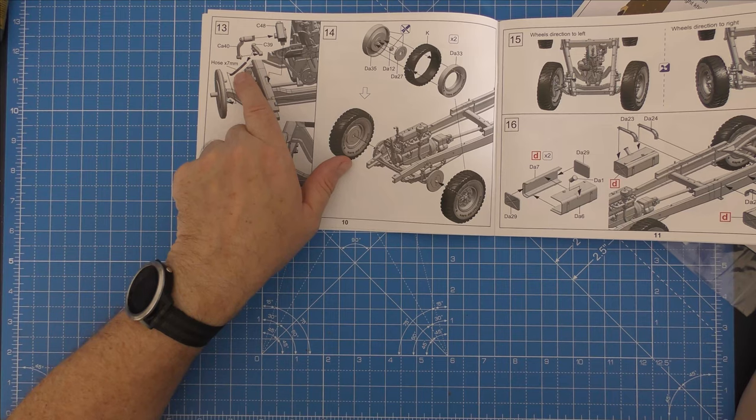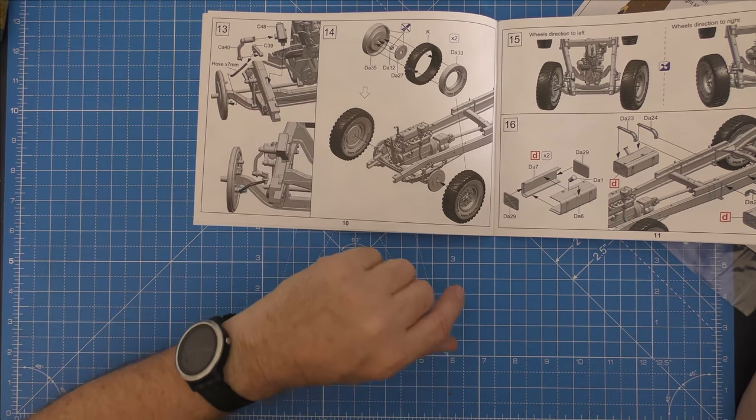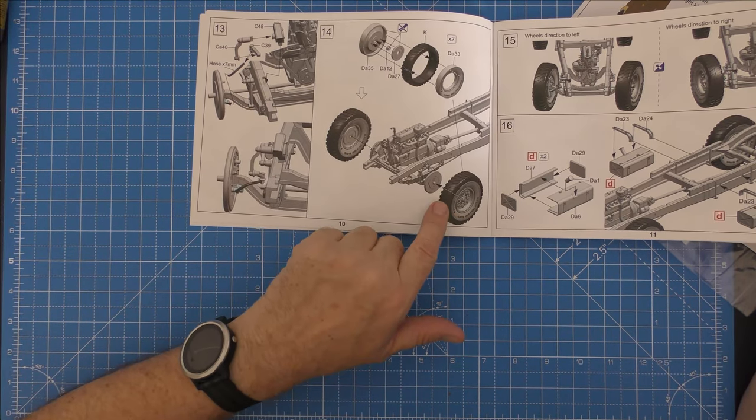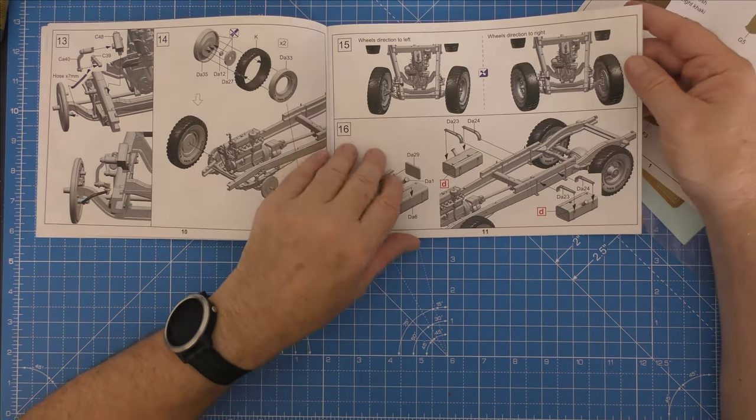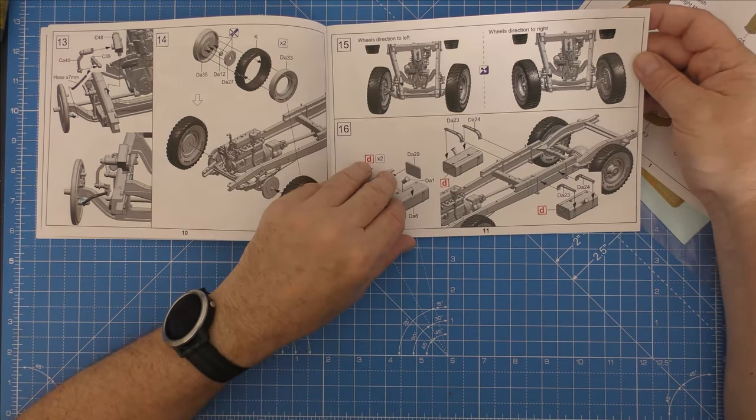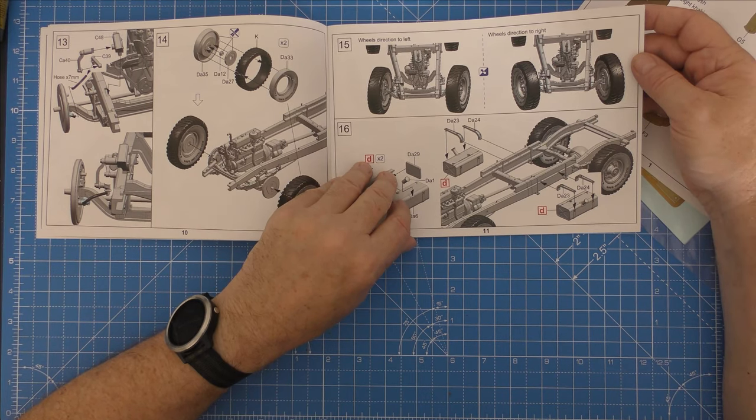Again continuing, you've got some hose to put in which to me looks like a piece of wire in the kit. That's obviously for the hydraulics for the brakes I assume, but it only seems to put it on one side which seems a bit odd to me.